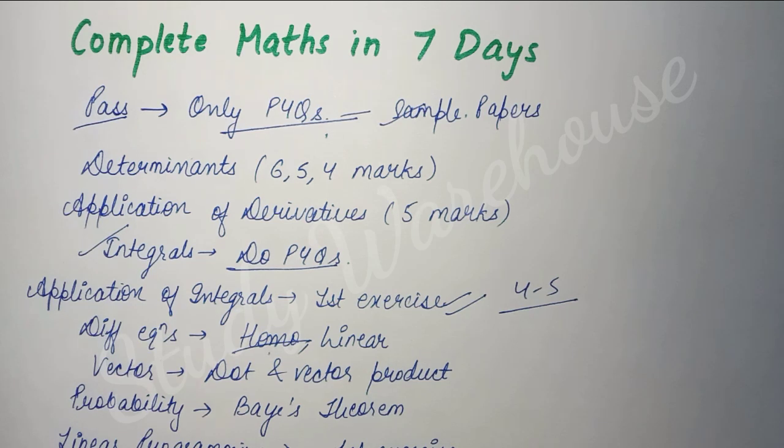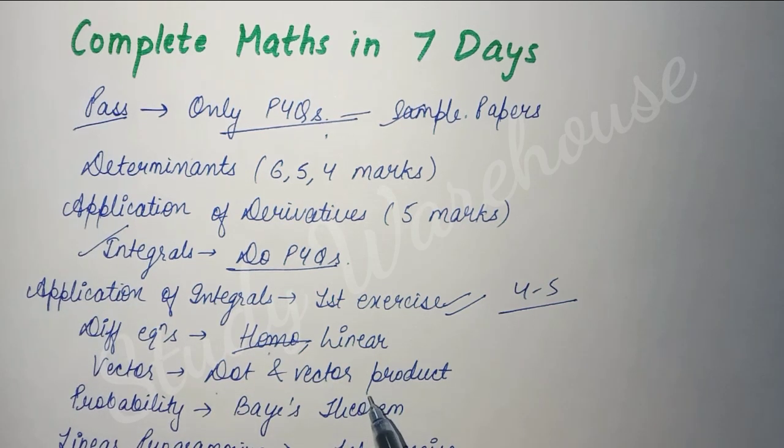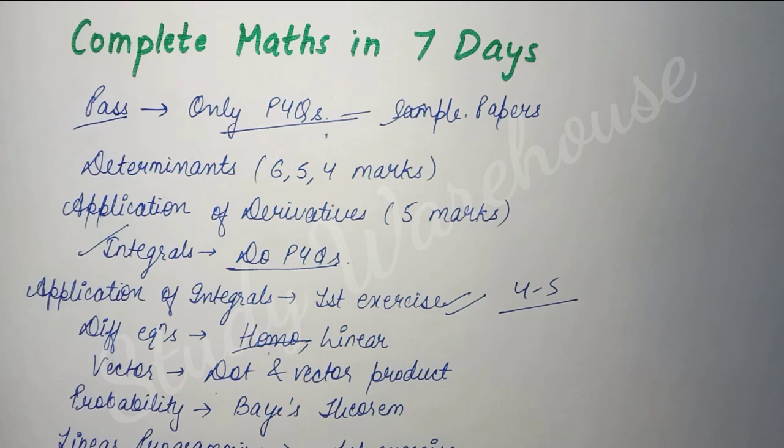After that, if we talk about Vectors, in this there's just dot product and vector product. It's not difficult at all because this portion is also covered in class 11th. After that, you need to find area with the help of vector product. That's also not difficult. The Vectors chapter is easy and at the same time it is scoring as well. So in the vectors chapter, do dot product, cross product, and finding area with its help.